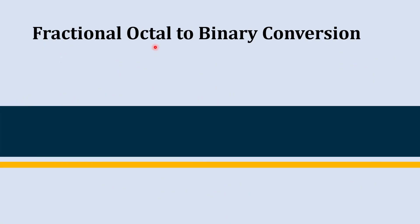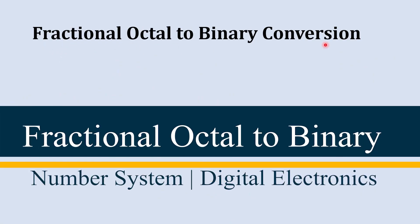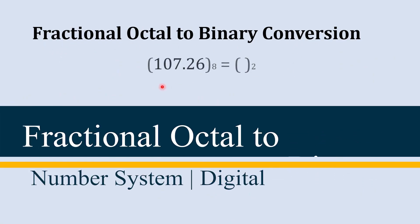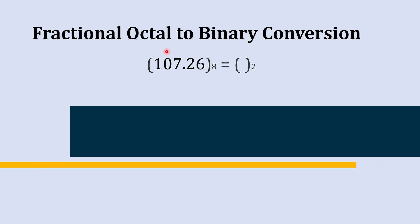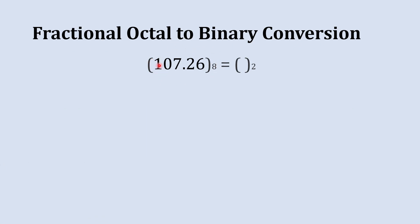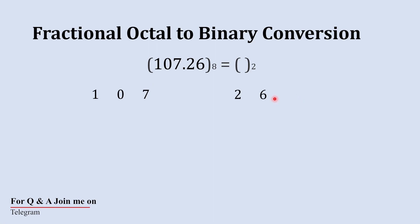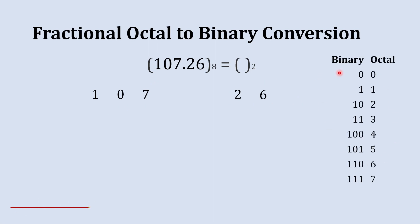Now it's time to convert a fractional octal number into binary. First we are going to write the fractional octal number, which is 107.26. In the first half we are going to convert 107 into binary, and then we will convert .26. Here is our binary to octal conversion table.